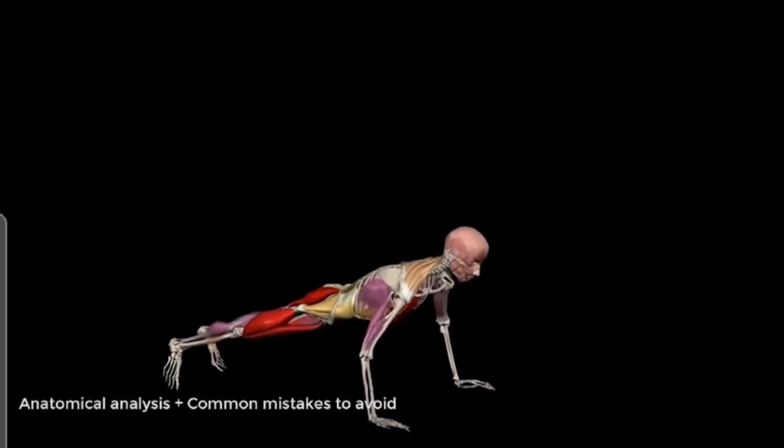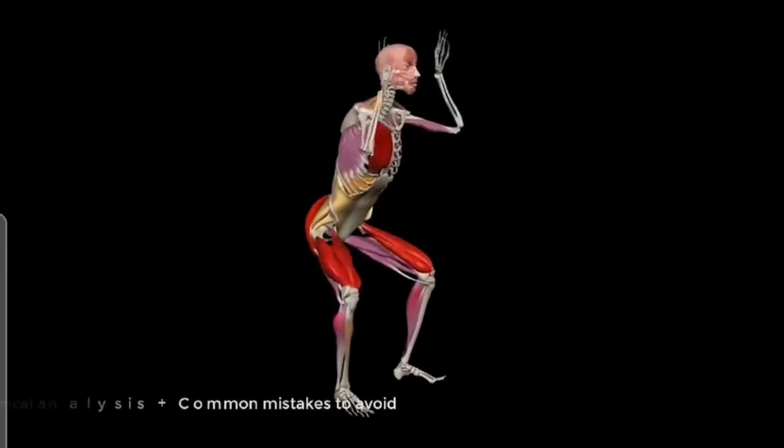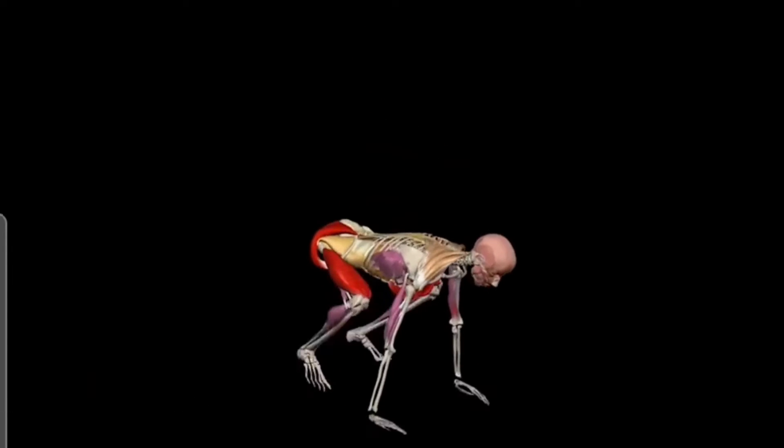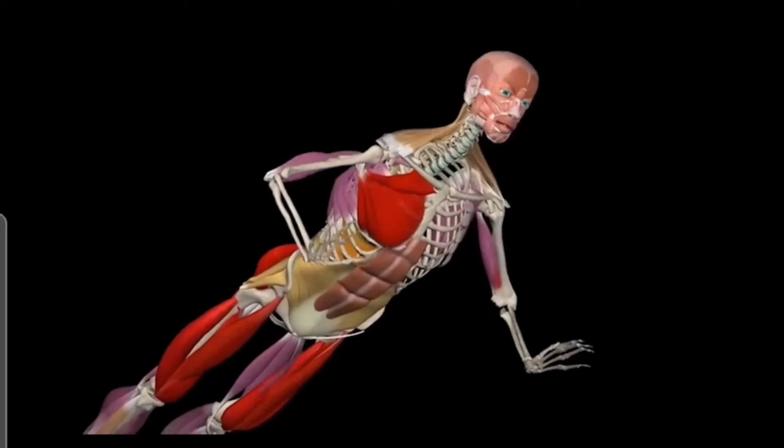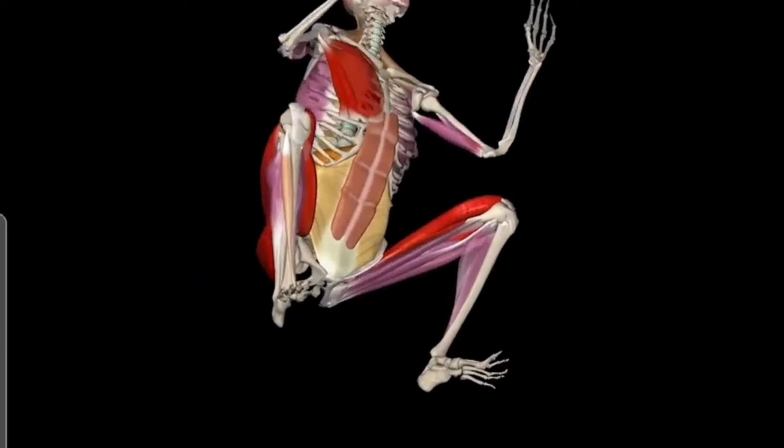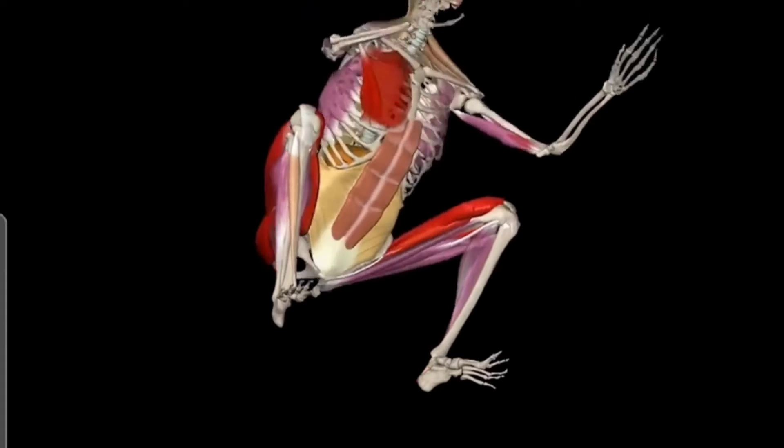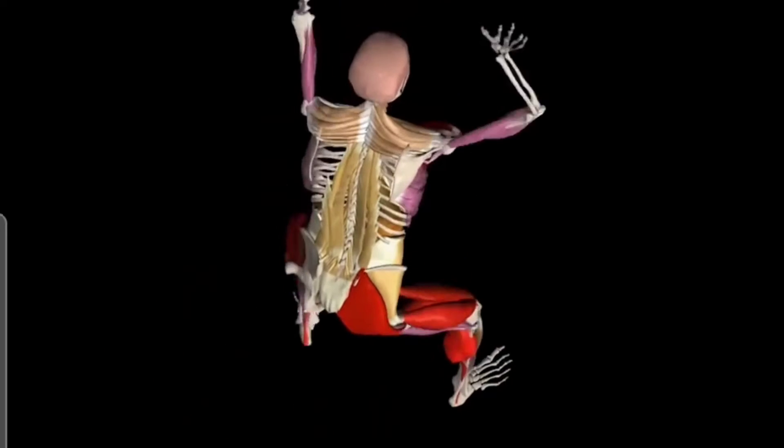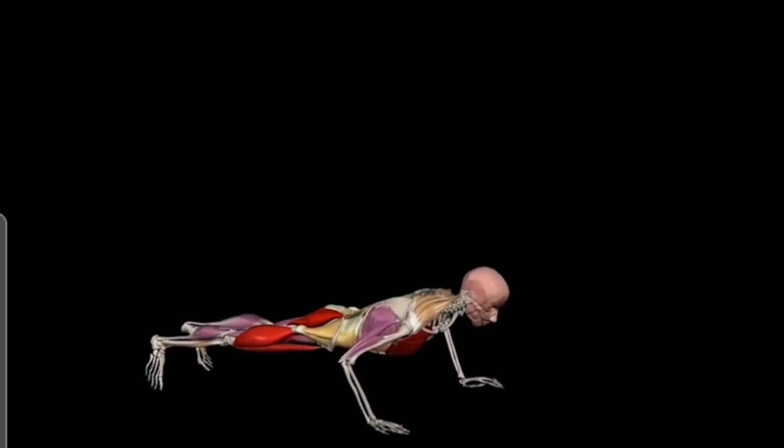The burpee is a combination of multiple exercises, so it integrates different muscle groups. During the push-up, the pectoral muscles are the main active muscles. The hip flexors, iliopsoas, create the jump from plank to squat, while the core muscles stabilize the spine.